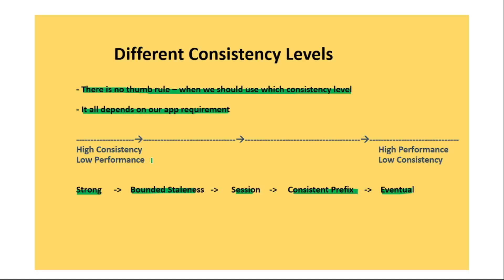Before we discuss each level in detail, remember: as we go from left to right, we move from high consistency to low consistency. On the left side we have low performance, because high consistency requires data to be immediately reflected in the secondary region. As we move to the right, performance increases. In short, strong gives high consistency but lowest performance, and eventual gives high performance but low consistency.